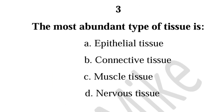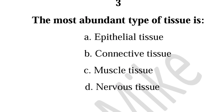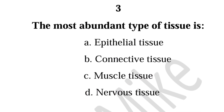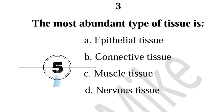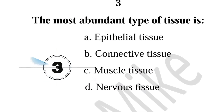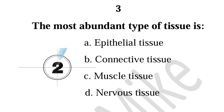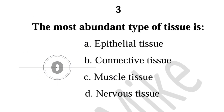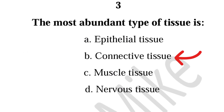Three, the most abundant type of tissue is connective tissue.